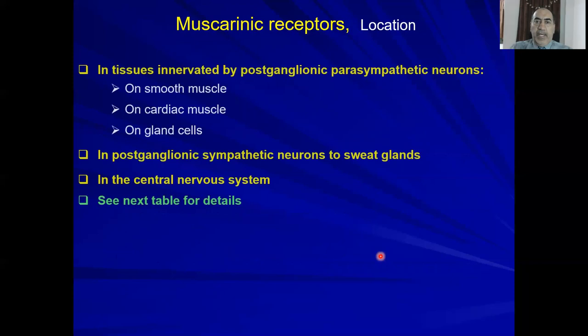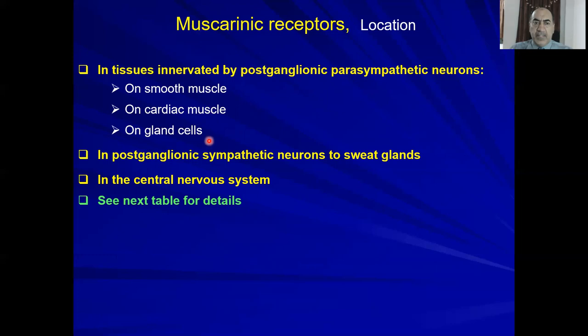A third signaling category involves G-protein-associated or gated channels, where the muscarinic G-protein receptor may activate or inhibit potassium and calcium channels. These receptors are located in tissues innervated by post-ganglionic parasympathetic neurons. Pre-ganglionic parasympathetic and sympathetic neurons release acetylcholine onto nicotinic receptors, but post-ganglionic parasympathetic neurons release acetylcholine onto muscarinic receptors. They are found on smooth muscle, cardiac muscle, and gland cells.